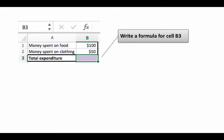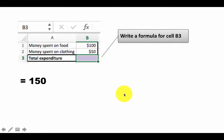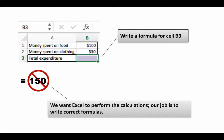Now, write a formula for cell B3. What about writing =150? That certainly is correct — 100 plus 50 is 150 and some people would do that. But this is a really dangerous approach because we are trying to use Excel to perform the computations. There's really no point in us performing the computation and using Excel like a word processor just to put in the results.